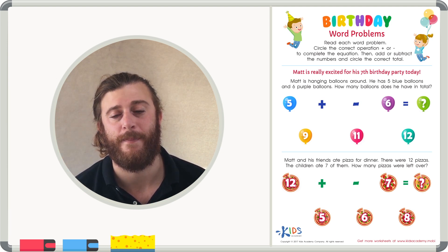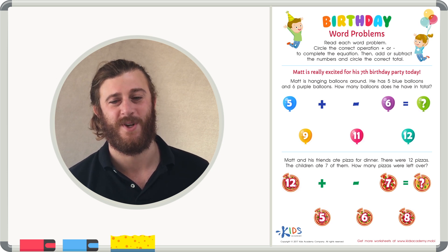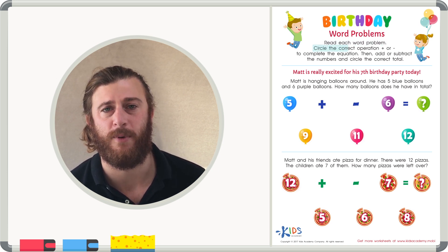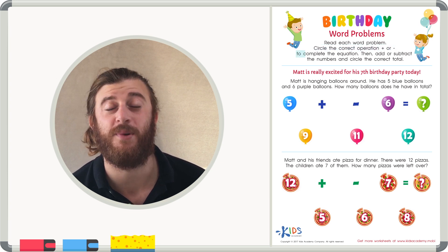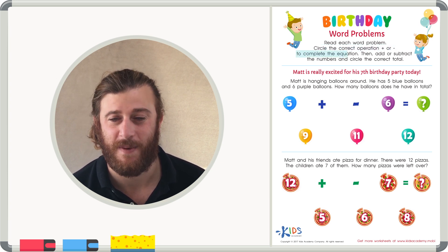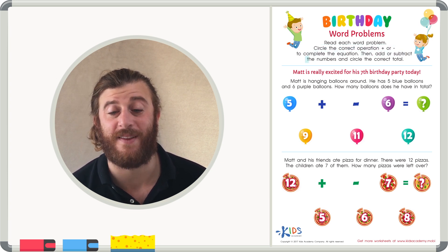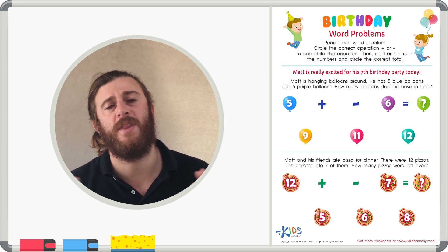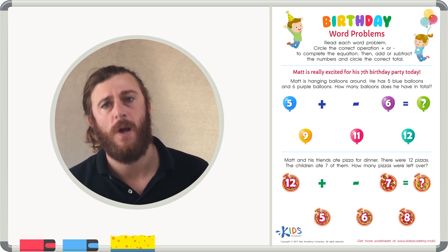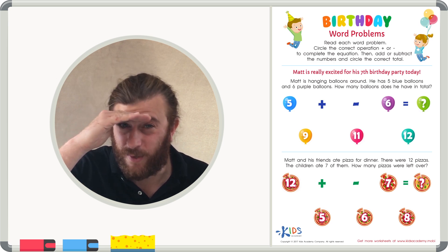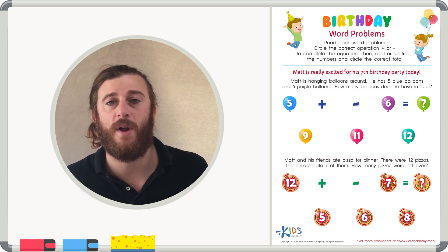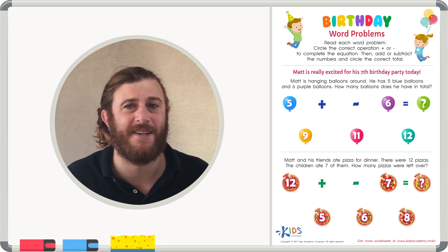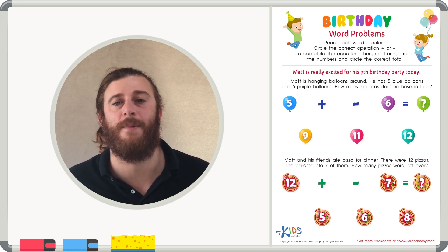Let's get started right away — Birthday word problems. Read each word problem. Circle the correct operation, plus or minus, to complete the equation. Then add or subtract the numbers and circle the correct total. So in this worksheet, we're going to have to read the problems really carefully, figure out whether the problem is asking us to add or subtract, and then solve the problem.